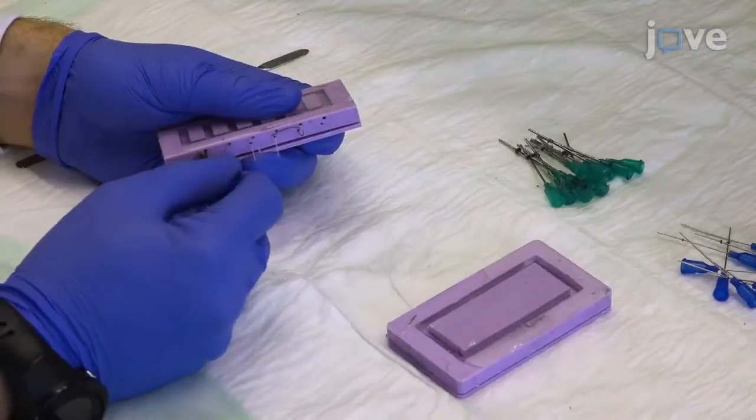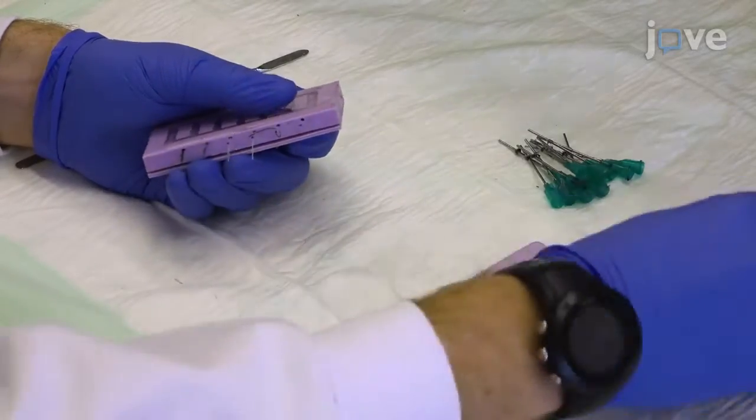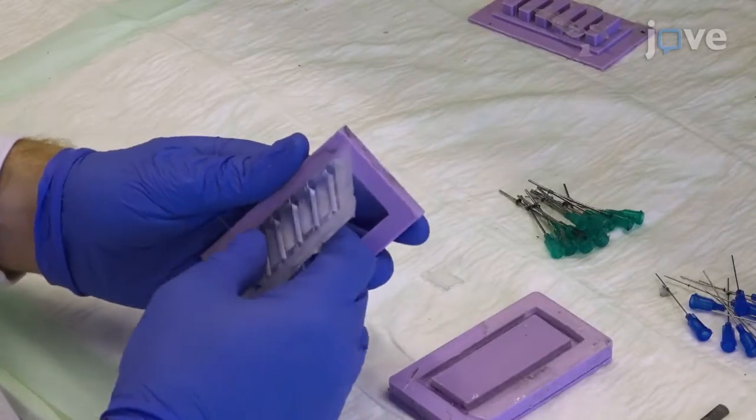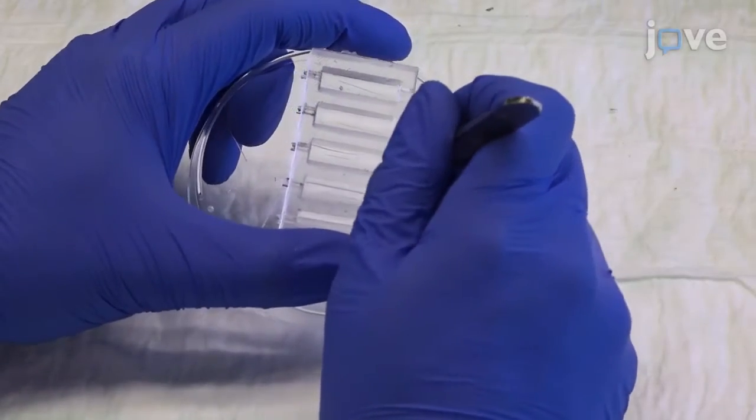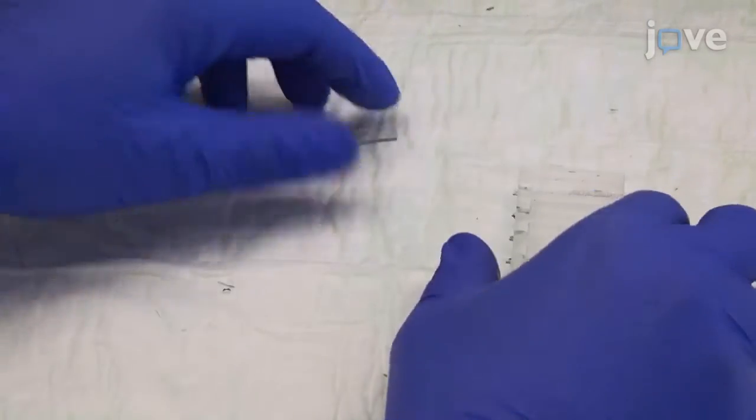When the PDMS is set, pull out the needles from the mold and carefully release the culture device and lid from the plastic molds. Remove PDMS residues from the well outline using a surgical blade.